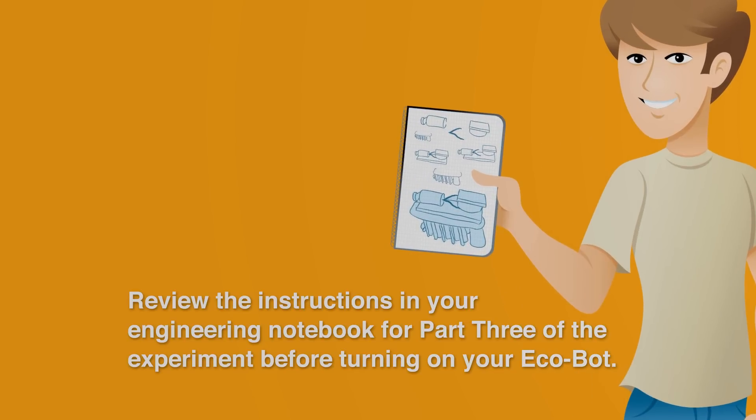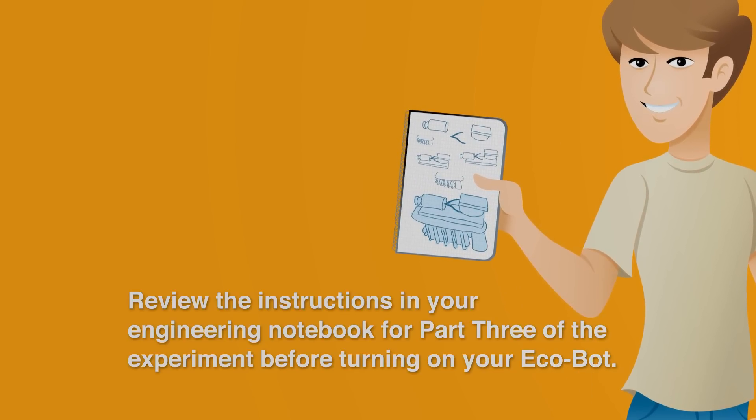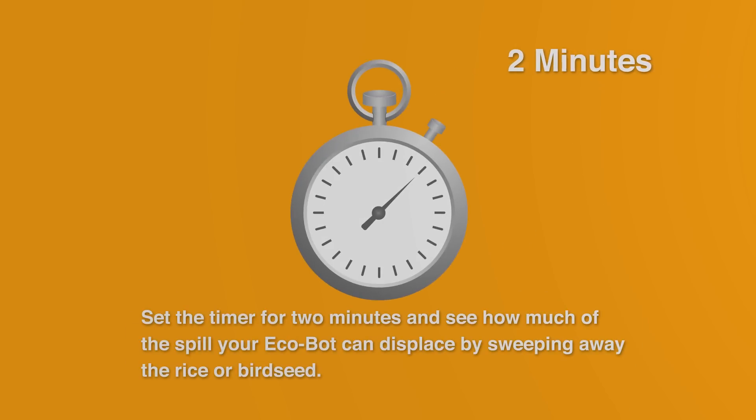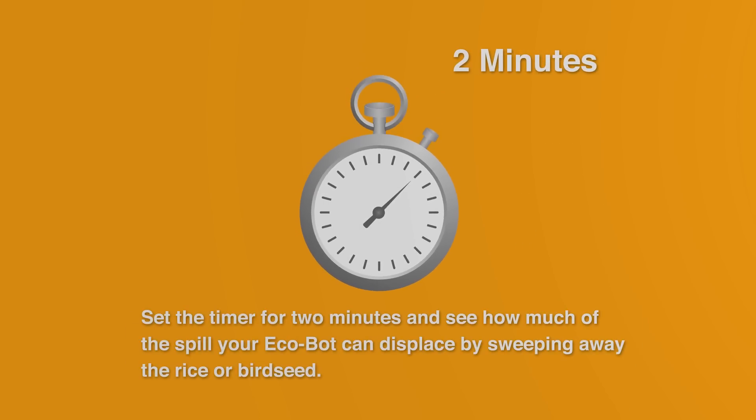Review the instructions in your engineering notebook for part 3 of the experiment before turning on your Ecobot. Set the timer for 2 minutes and see how much of the spill your Ecobot can displace by sweeping away the rice or birdseed. After your test, it's time for the real challenge.